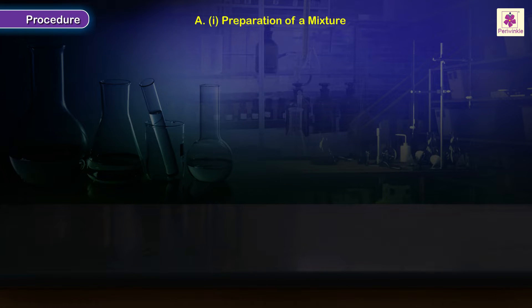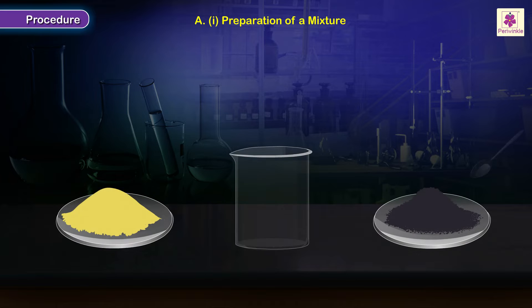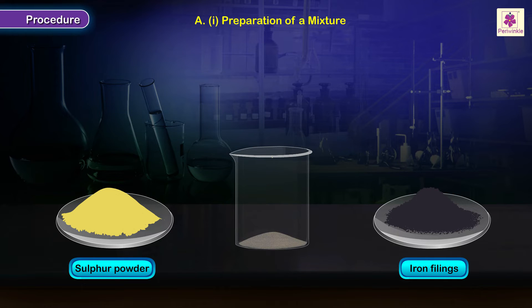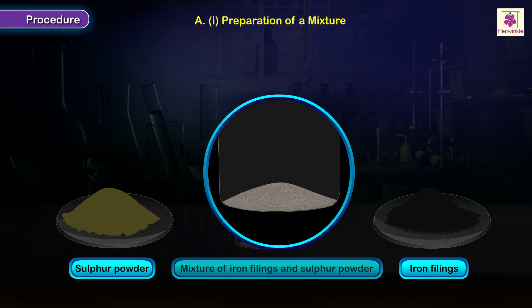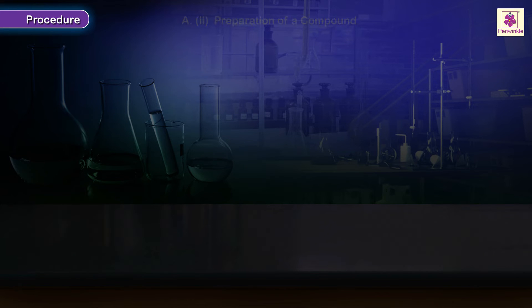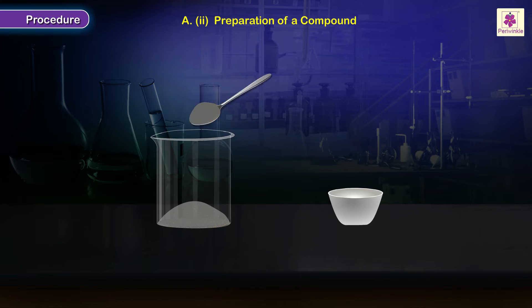Procedure for the preparation of a mixture of iron filings and powdered sulfur: place some iron filings and sulfur powder in a clean beaker. Thoroughly mix the contents of the beaker. The mixture of iron filings and powdered sulfur is now ready. Label this as Sample A.